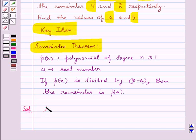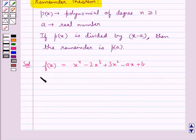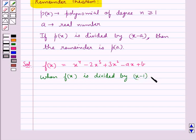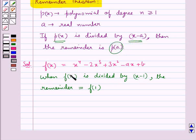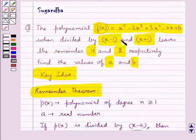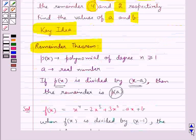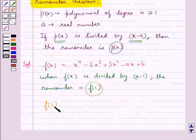Let's proceed with the solution now. We are given the polynomial f(x) equal to x to the power 4 minus 2x cube plus 3x square minus ax plus b. Now it's given when f(x) is divided by x minus 1, the remainder would be equal to f(1) using the remainder theorem — that is, when p(x) is divided by x minus a, its remainder is p(a). So in this case the remainder is f(1), and the question states the remainder is 4. So we say f(1) is equal to 4.